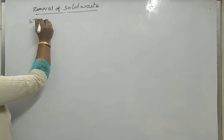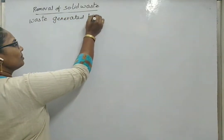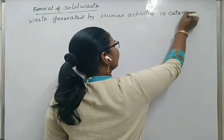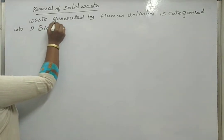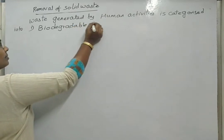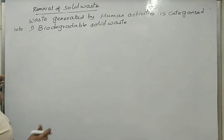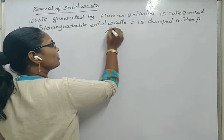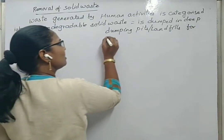Waste generated by human activities is categorized into different types. The first type is biodegradable solid waste. This biodegradable solid waste is dumped in deep pits or landfills for natural breakdown, meaning it will be converted back to soil.